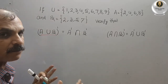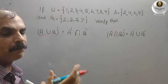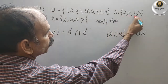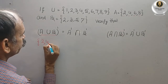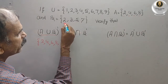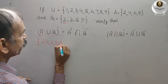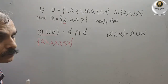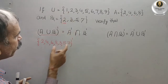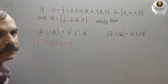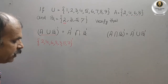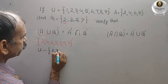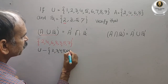First, find A union B — that means every element of A and B. A has {2,4,6,8} and B has {2,3,5,7}. Since 2 is repeated, we need not write it twice. So A union B is {2,3,4,5,6,7,8}. Now for the complement, we have to subtract these elements from U.